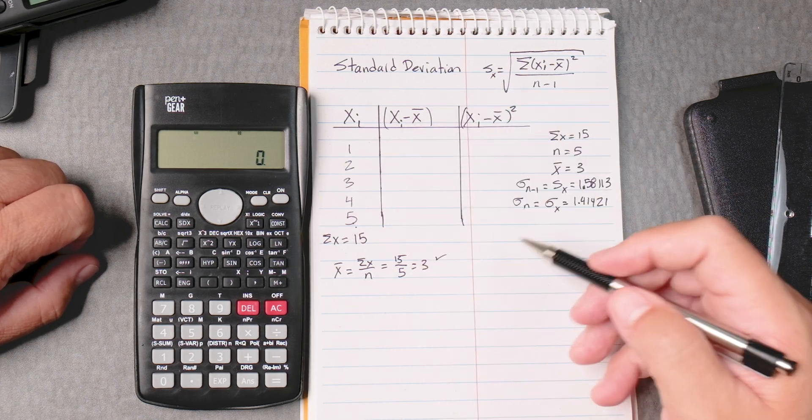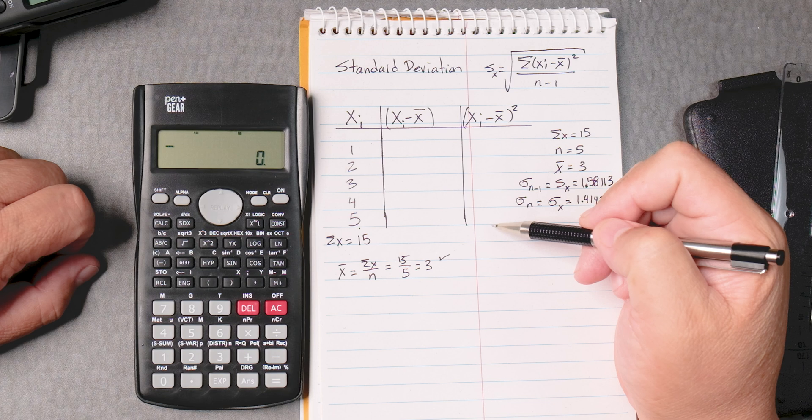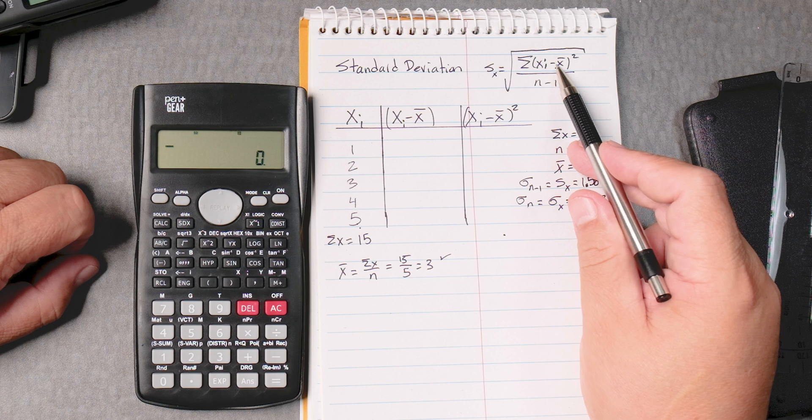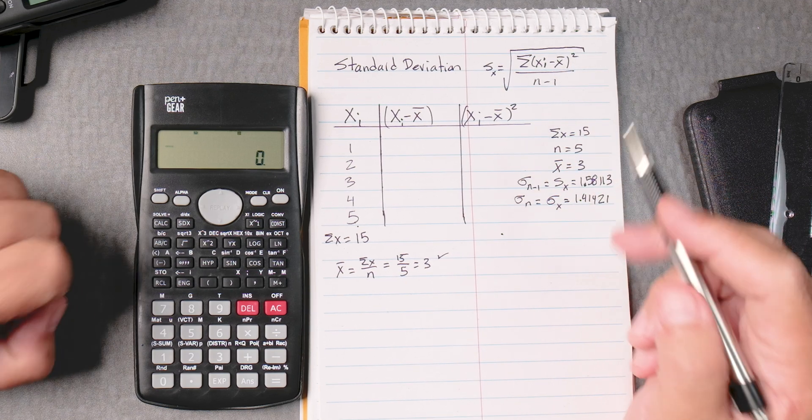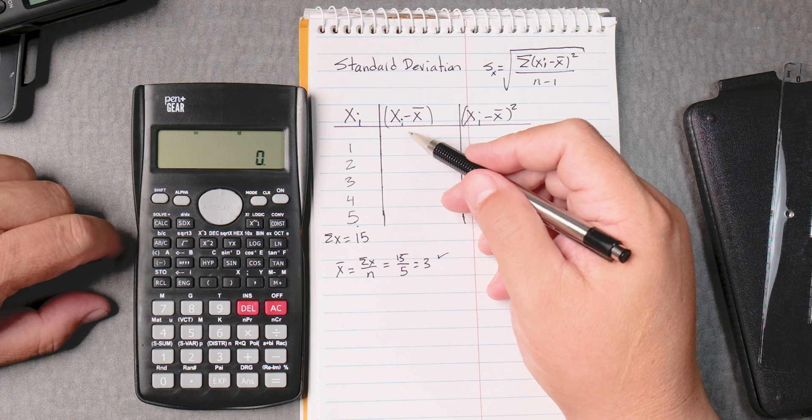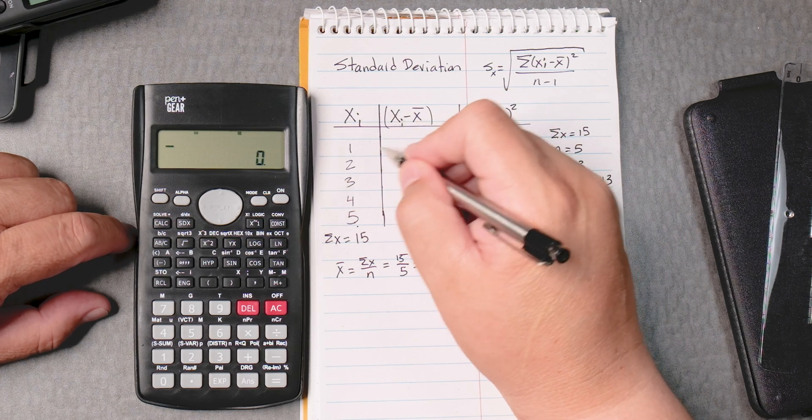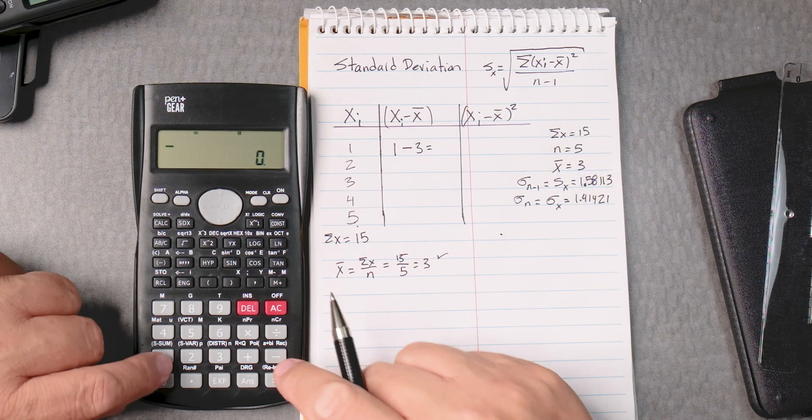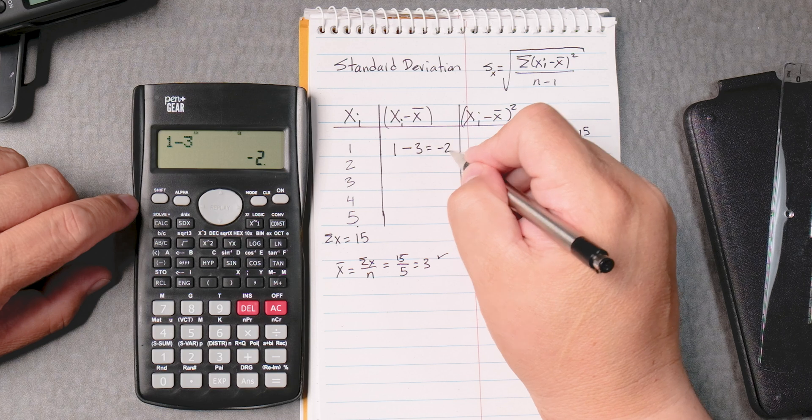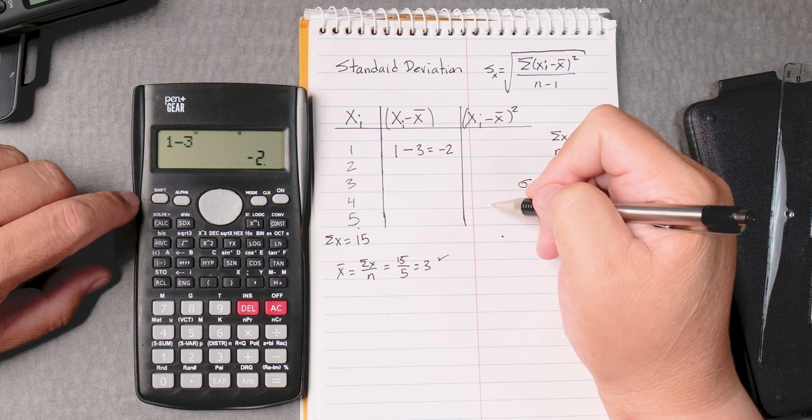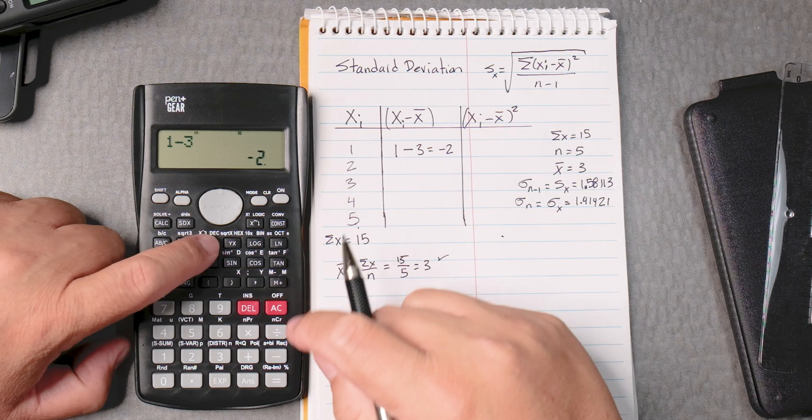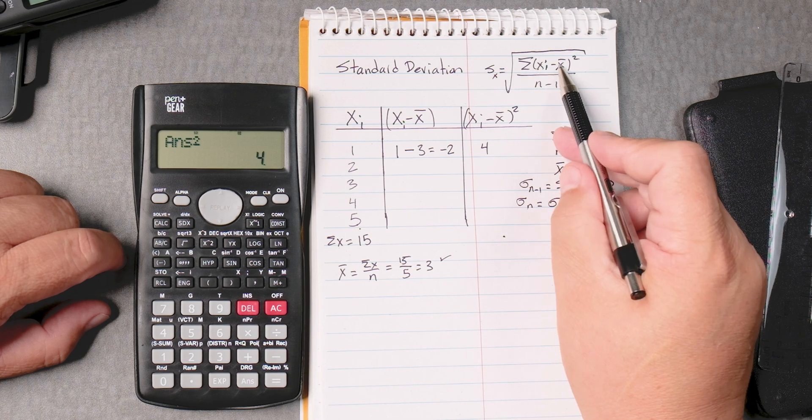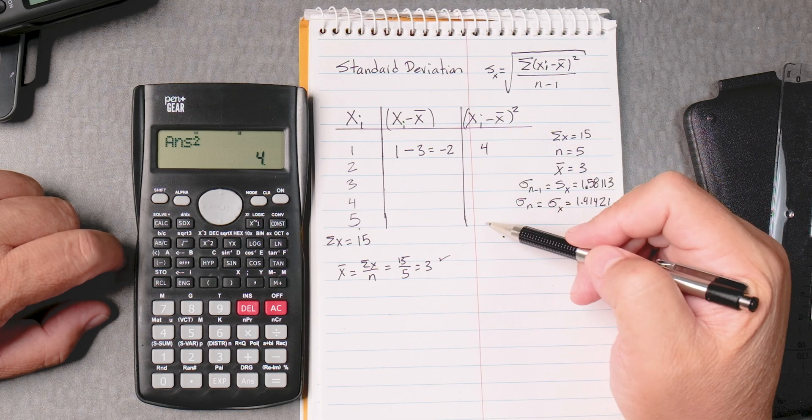So to do this by hand, we need to fill out these columns because ultimately we want the sum of this column to put here on the numerator. And then we got 5 take away 1, and then we can do the rest. So to start, we need to fill this column. Here we got xi, which is our first data point, take away x bar, which is 3, equals... well, 1 take away 3 equals negative 2. We move to the next column to square it, and then we can square it equals 4. We have 2 columns because the first column is to find the difference, and then the second column is to find the square.